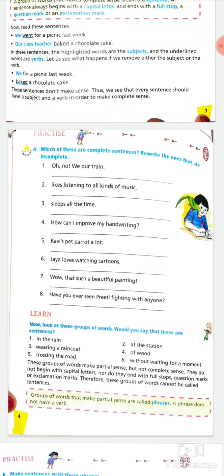Fourth one: 'how can I improve my handwriting?' It's perfect as it is — no improvement needed. You will write that it makes complete sense, or write 'the sentence is complete.' Fifth one: 'Ravi's pet parrot a lot' — a verb is missing. The answer will be: Ravi's pet parrot talks a lot, or eats a lot — any suitable verb. Sixth one: 'Jaya loves watching cartoons' — it's a complete sentence.